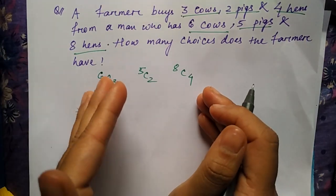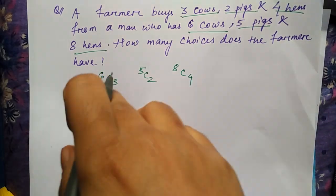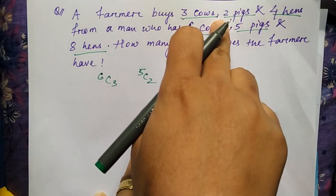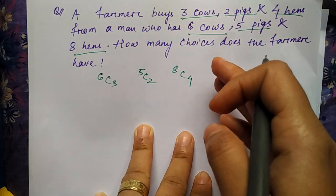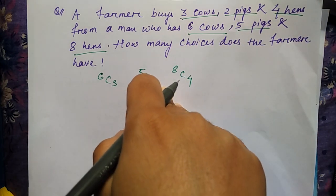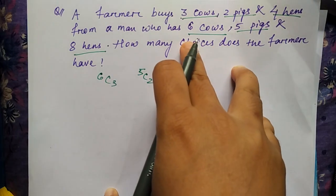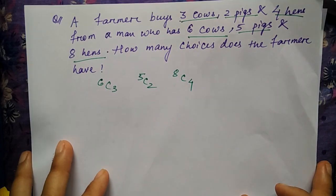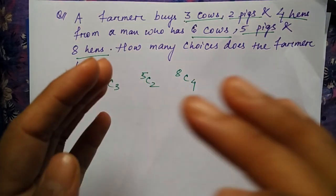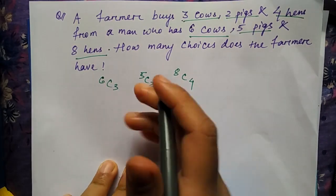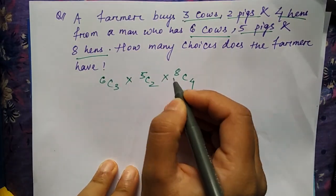So it is asking how many choices the farmer has - three different things to get. But what should be the operation in between them? Here you can see the number of cows is dependent on the total number of pigs and hens it is getting. So total number of choices will consist of cows, pigs, and hens all three together. Each event is dependent on each other. That is why, according to the principle of computation, you have to multiply them.